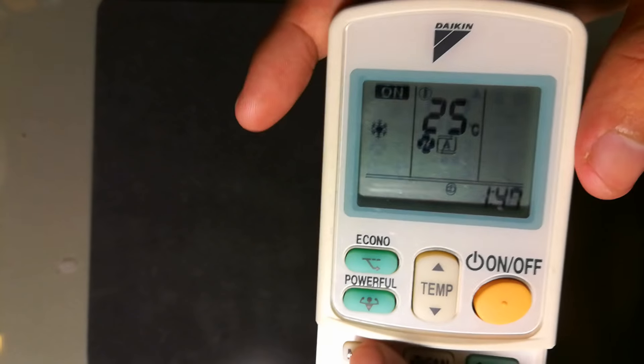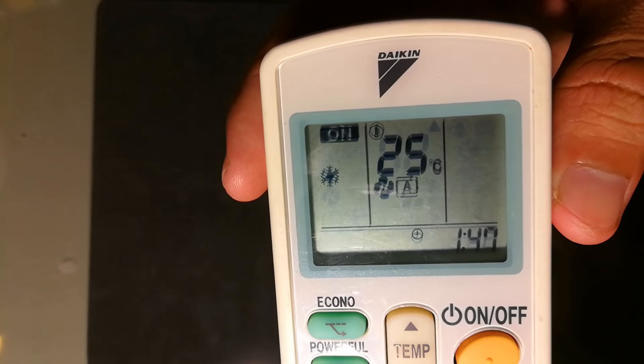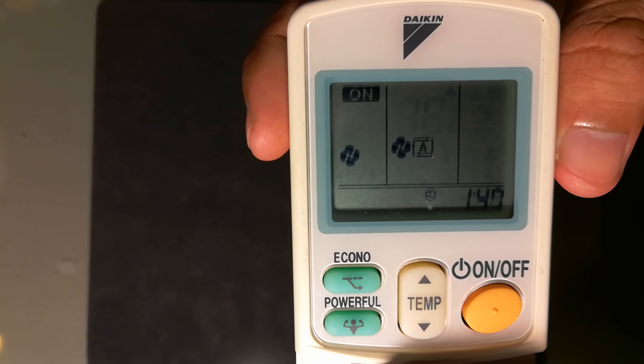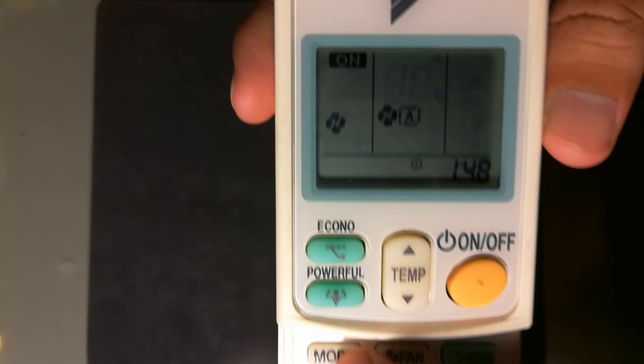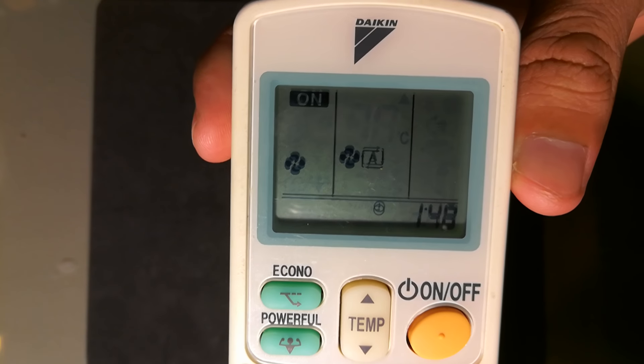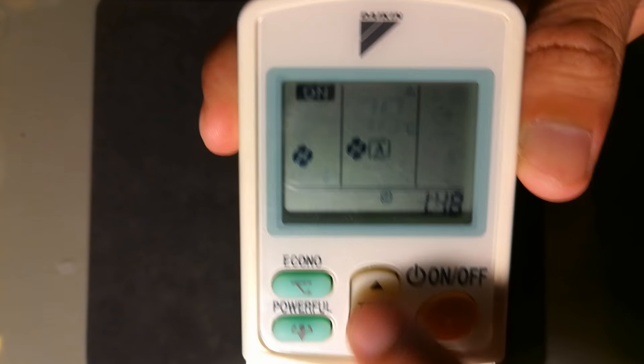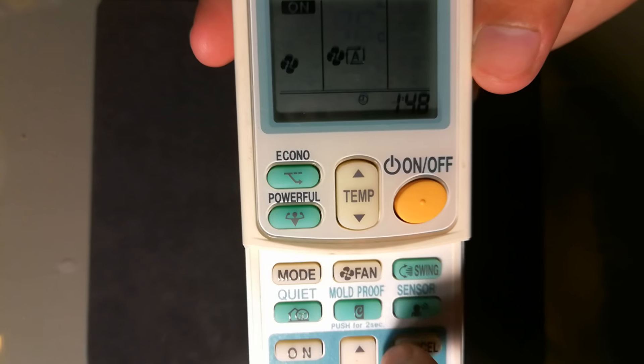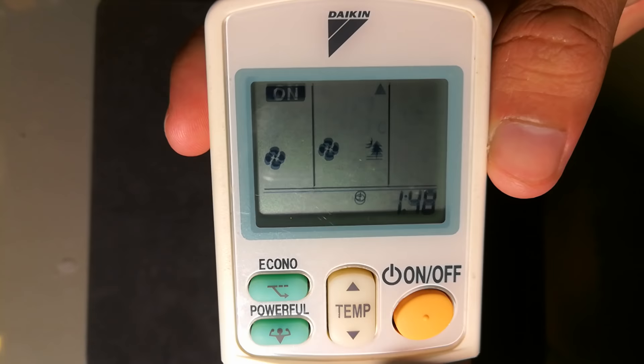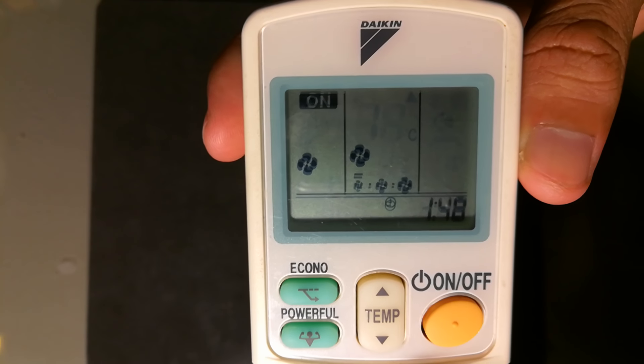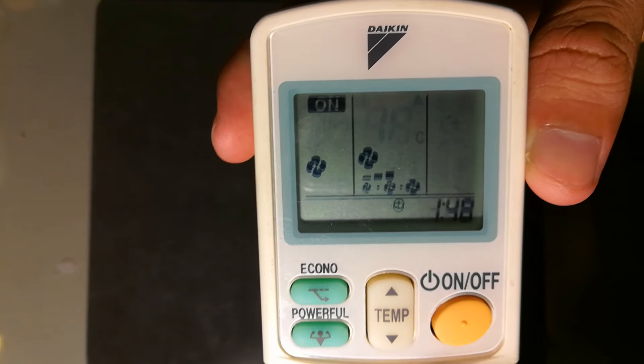Another mode is fan mode. In fan mode, the temperature cannot be adjusted - it's not available, so the temperature doesn't display. But you can adjust the fan speed from low speed, medium speed, high speed, highest speed, and auto.